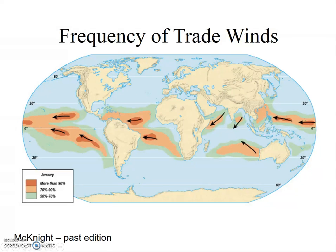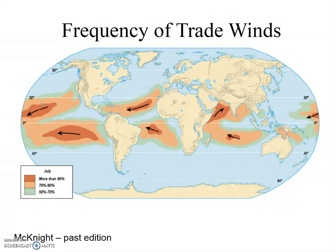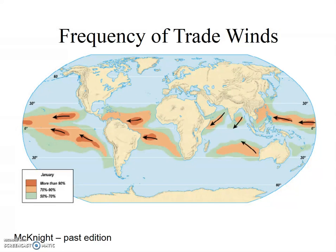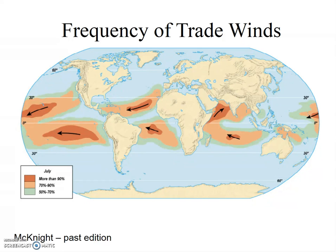The trade winds are a very consistent wind, at least in January. Check out what happens in July — most of the world remains consistent, but there's one place where the wind actually reverses direction. We'll talk about that a little later when we discuss monsoons. See if you can find the place where the wind reverses direction in July and think about why that might happen.